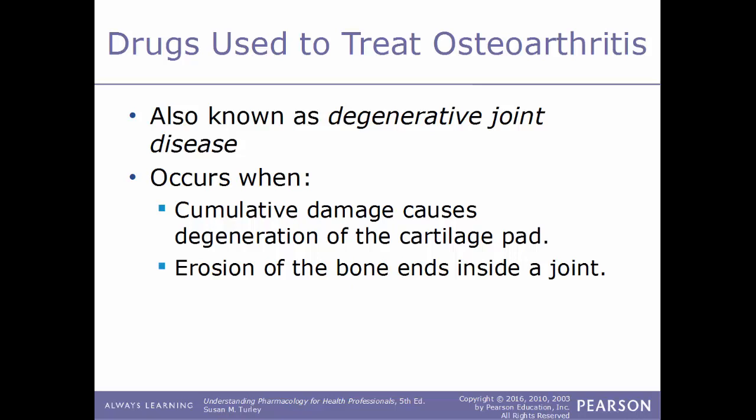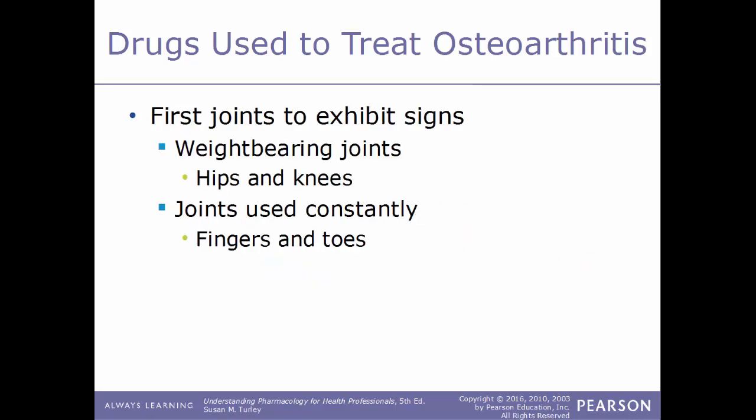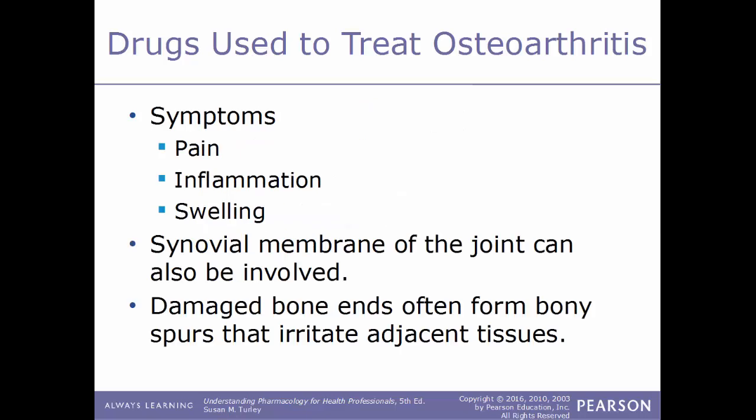The first joints to exhibit signs of osteoarthritis are the weight-bearing joints such as the hips and knees, and joints used constantly like the fingers and toes. Because they bear weight or are used more often, they develop more wear and tear faster than other joints. Common symptoms of osteoarthritis include pain, inflammation, and swelling. The synovial membrane of the joint may also be involved, and damaged bone ends often form bony spurs that irritate adjacent tissues.